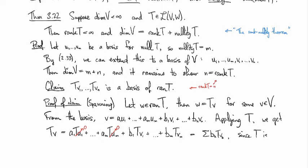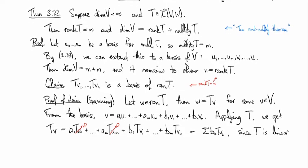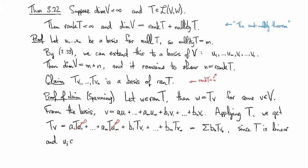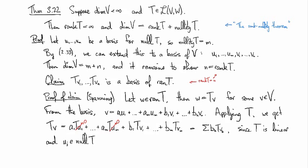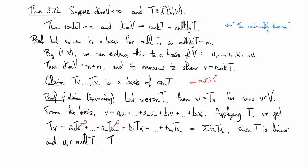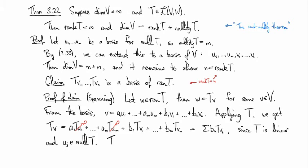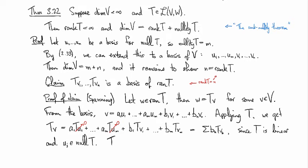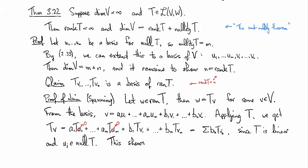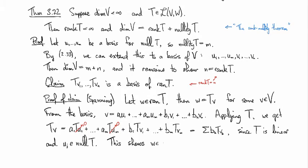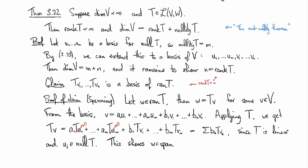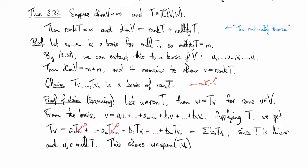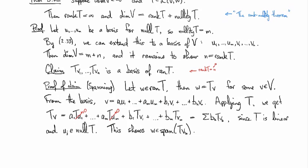So I've used that T is linear and the uj's are in the null space of T. So since Tv is a linear combination of the vk's, this shows that w is in the span of the Tvk's. So that's the spanning part.